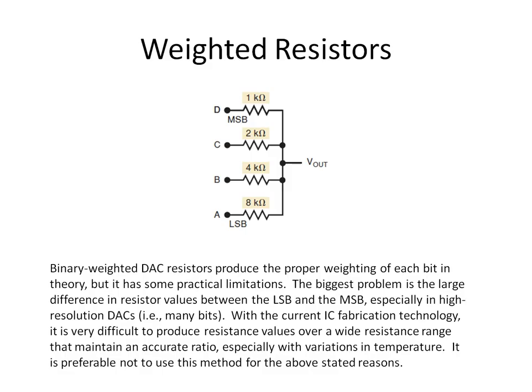The binary weighted DAC resistors produce the proper weighting of each bit in theory, but it has some practical limitations. The biggest problem is the large difference in resistor values between the LSB and the MSB, especially in high resolution digital analog converters. With current IC fabrication technology, it is very difficult to produce resistor values over a wide resistance range that maintain an accurate ratio, especially with variations in temperature. It is preferable not to use this method for these reasons.